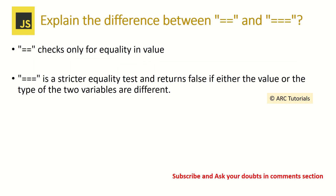Explain the difference between double equal to (==) and triple equal to (===). Double equal to checks only for equality in value and not data type. Whereas triple equal to is a stricter equality test and returns false if either the value or the data type doesn't match or if they are different.